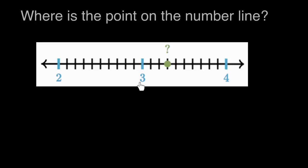So one thing we know pretty quickly is the number is between three and four. It's greater than three, but it's not quite four. But to figure out how much greater than three, we need to know what these black tick marks represent.